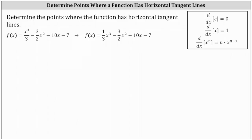We want to determine the points where the given function has horizontal tangent lines. Since horizontal lines have a slope of zero, and derivative function values are equal to the slopes of tangent lines, we will find the first derivative, set it equal to zero, and solve for x. The x-values will give us the locations at which the given function has horizontal tangent lines.